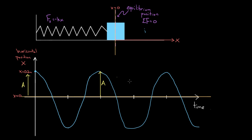We could also represent the period. Remember, the period was the time it takes to go through an entire cycle. So if our mass started here, to go through an entire cycle it better get back to that point and have reset completely. So on this graph, this is the period — the time it took to do that is one whole period.